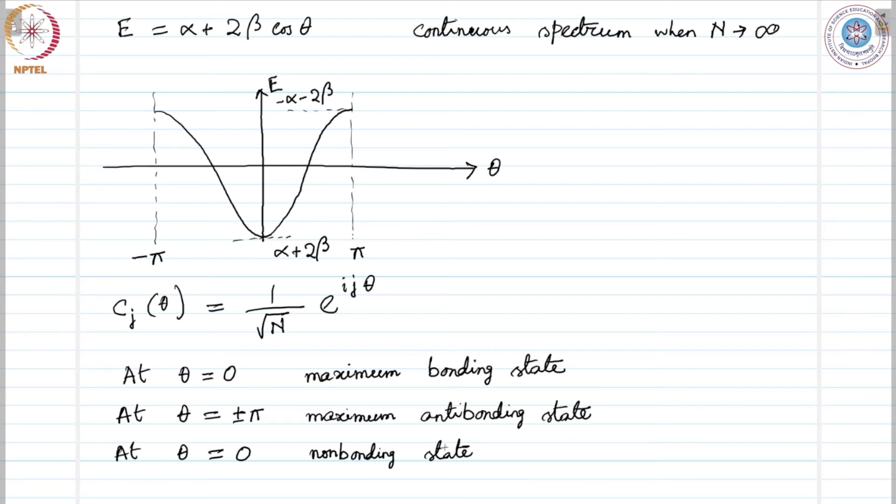The density of states can be given as D as a function of energy, which is the derivative of the number of states with respect to energy. We can write θ equals the crystal momentum times the distance between two hydrogen atoms, that is the lattice constant. Why can we do that?